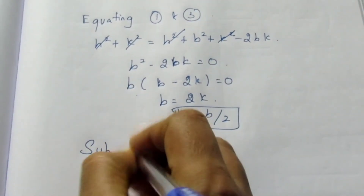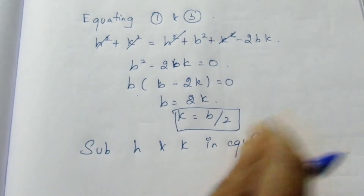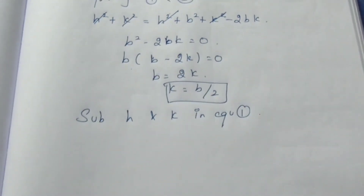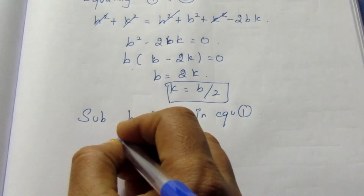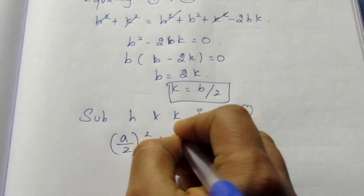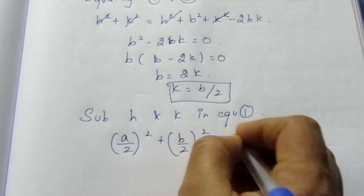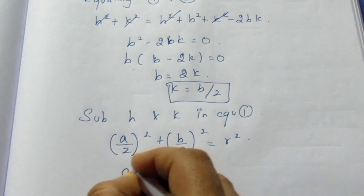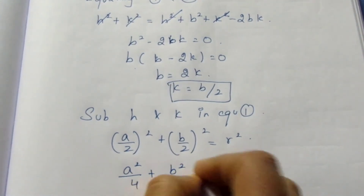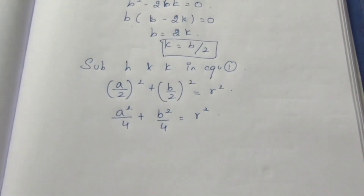Substituting h and k into equation 1, since it is the simplest, to find r: h² + k² = r², so (a/2)² + (b/2)² = r². Therefore r² = a²/4 + b²/4. We have found r².